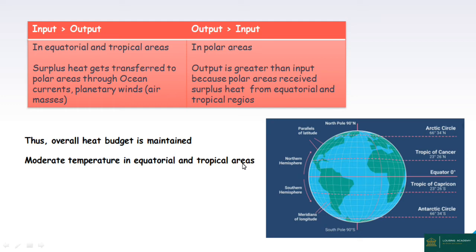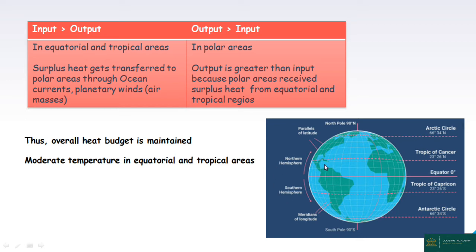Solar insolation is absorbed such that the input is greater than the output in the equatorial and tropical areas. The solar input exceeds the solar output there. The global heat energy is maintained through this imbalance. Surplus heat gets transferred to polar regions via ocean currents and planetary winds — warm ocean currents, cold ocean currents, and warm and cold air masses.